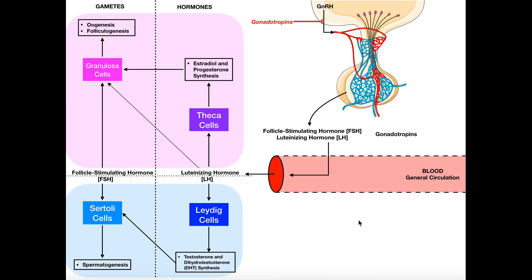Welcome back to the endocrine system on Catalyst University. In this video, we're going to be talking about the gonadotropins, which is a term used to describe two major hormones that are released from the anterior pituitary gland — follicle-stimulating hormone, or FSH, and luteinizing hormone, or LH. We'll talk about how they get released and then go into the various effects of each of these hormones.